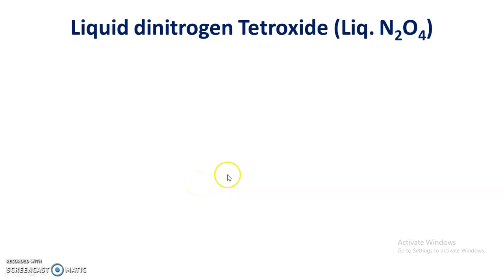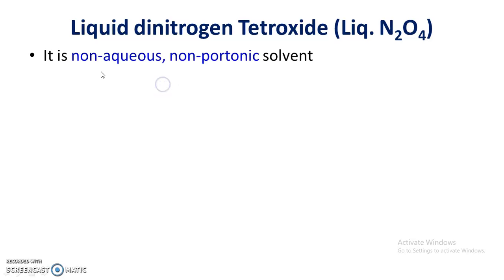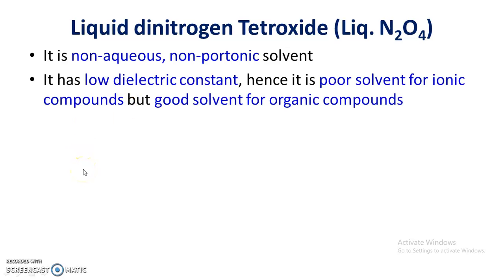In an earlier video we discussed liquid ammonia as a non-aqueous solvent. In this video we are going to discuss liquid dinitrogen tetroxide. It is a non-aqueous, non-protonic solvent. It has a low dielectric constant and therefore is a poor solvent for ionic compounds, having less ability to solvate ions. However, it is a very good solvent for organic compounds.